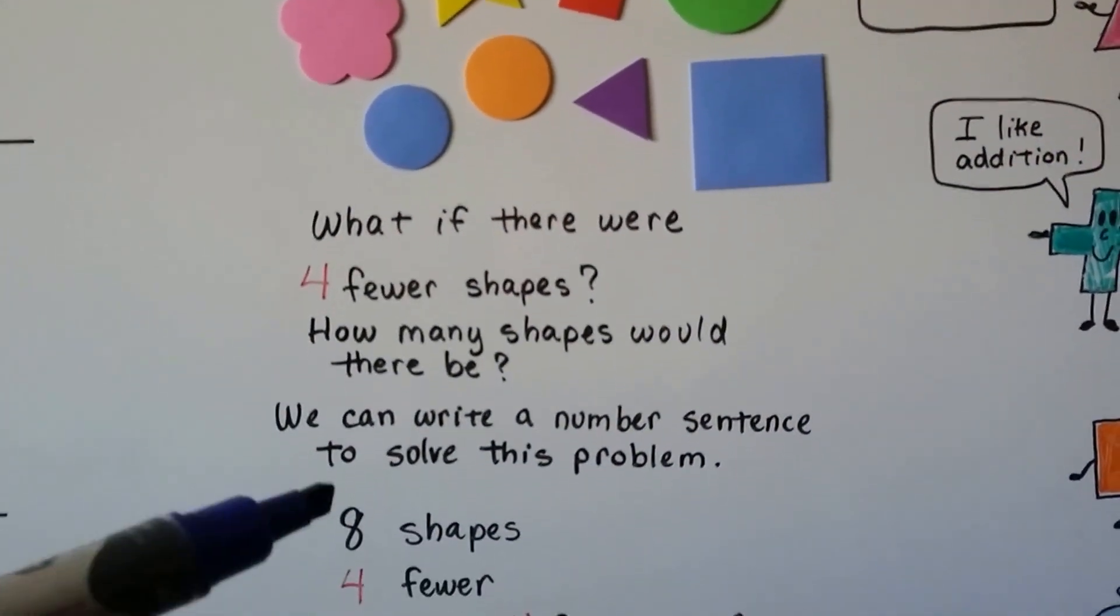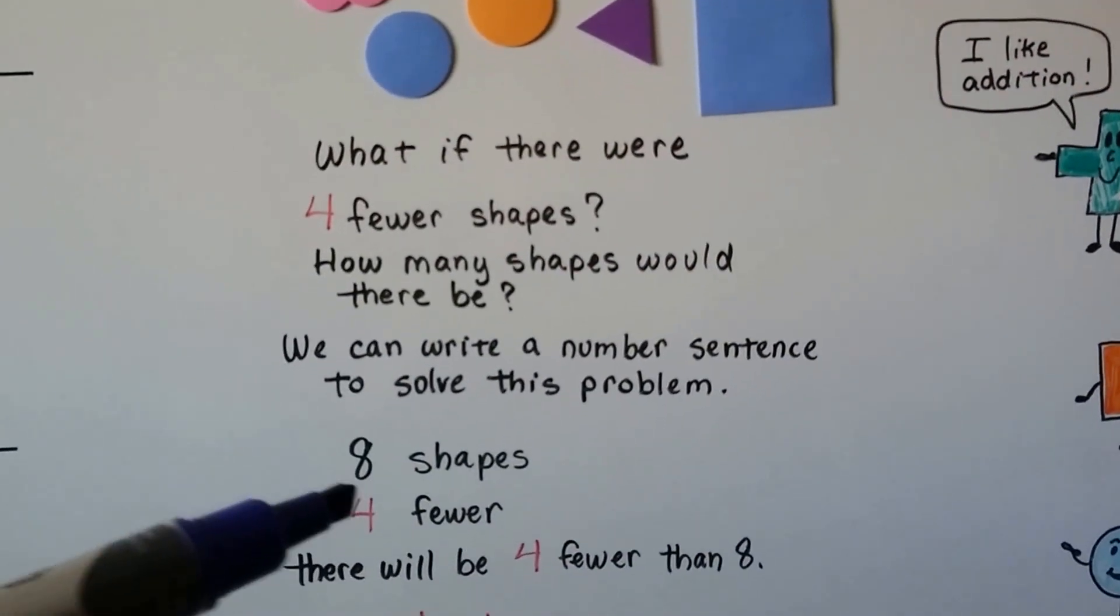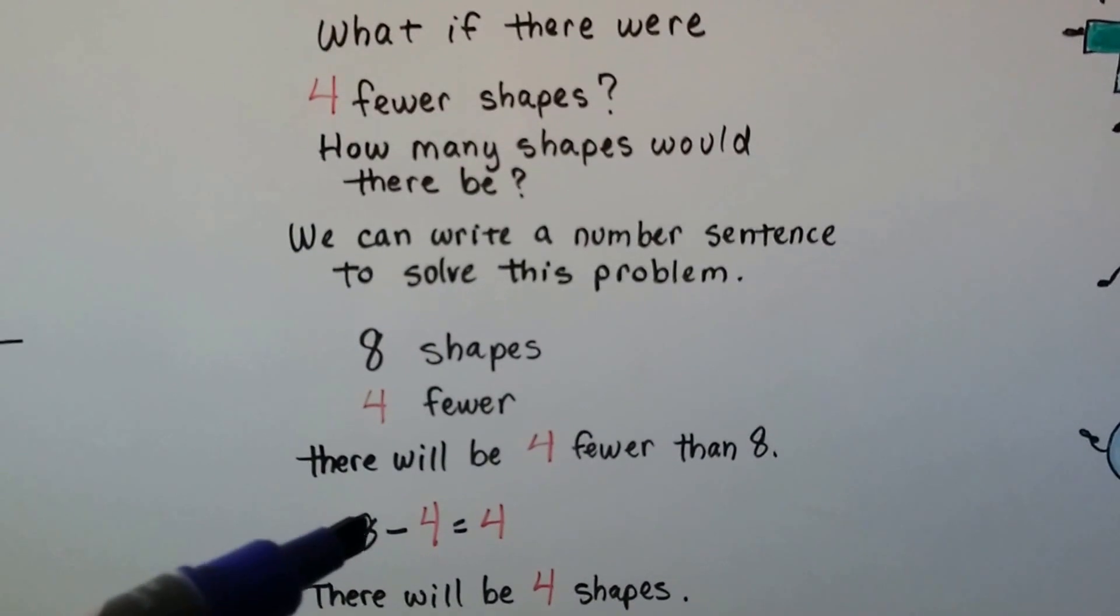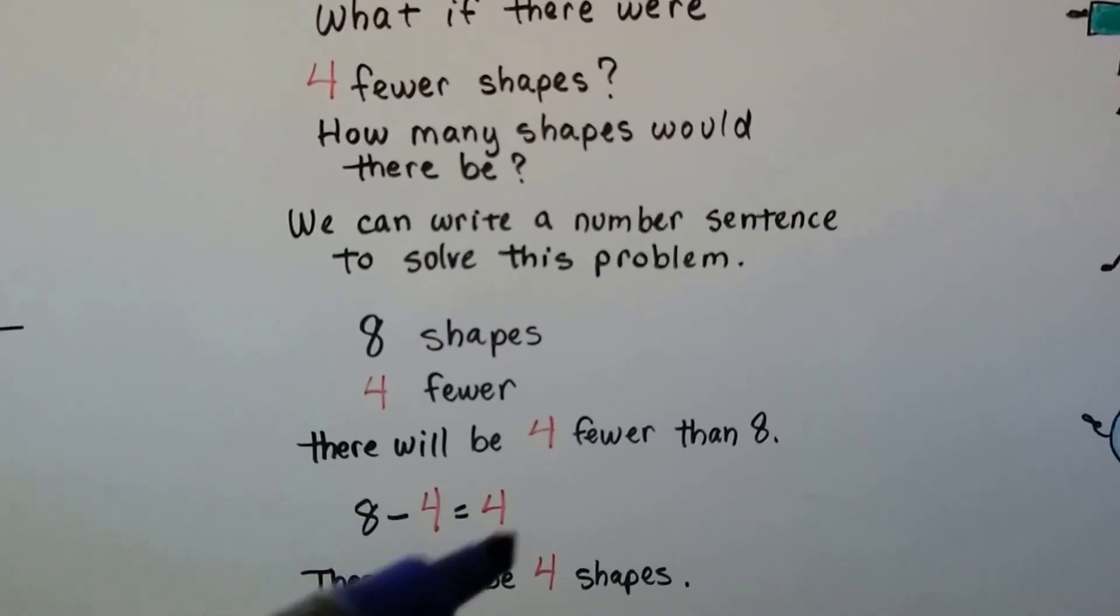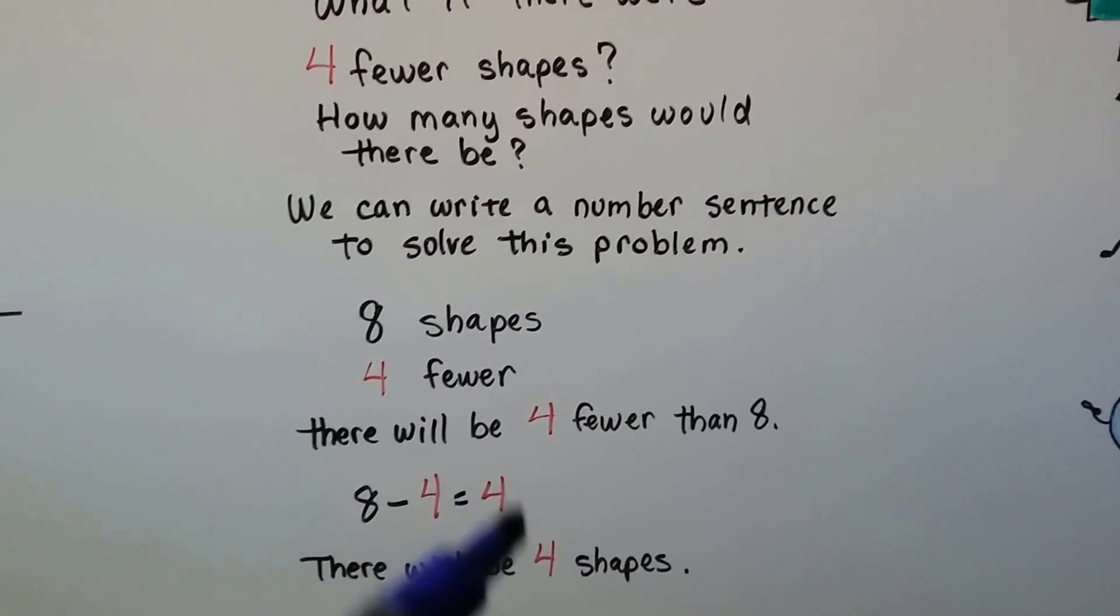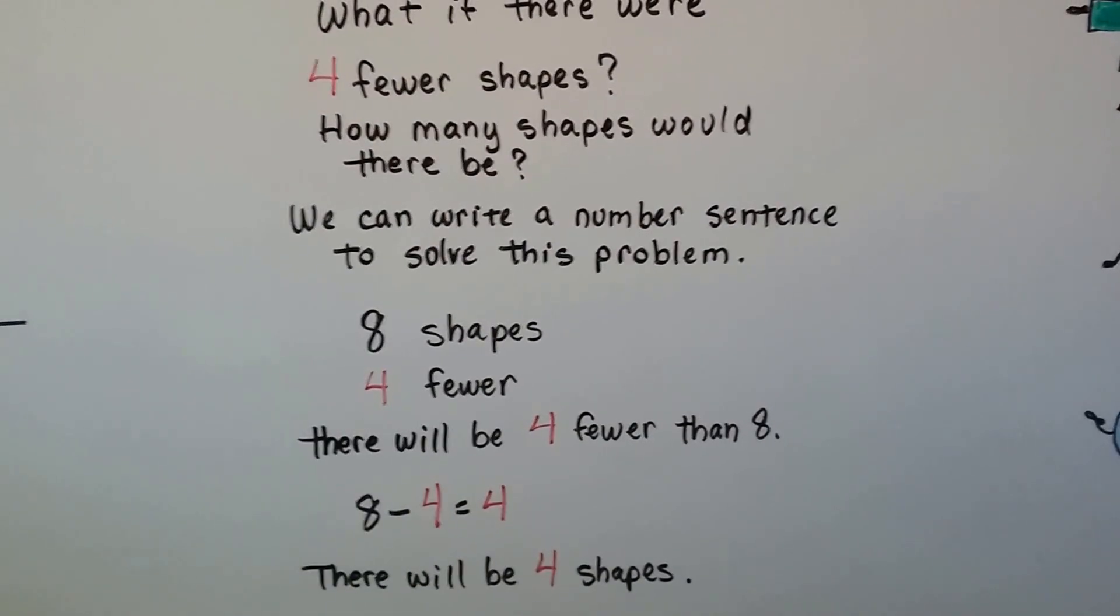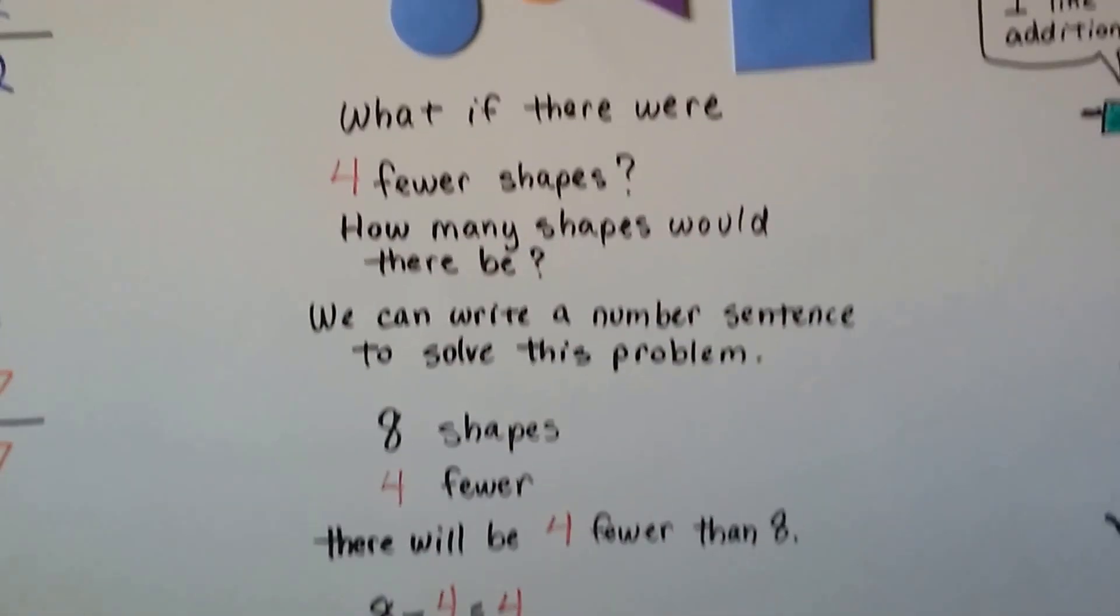There's 8 shapes. 4 fewer, there will be 4 fewer than 8. 8 minus 4 equals 4, so there'll be 4 shapes left over. 4 plus 4 equals 8. 8 minus 4 equals 4.